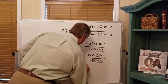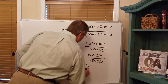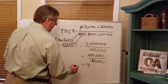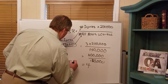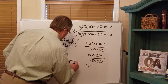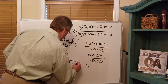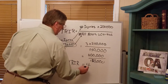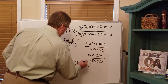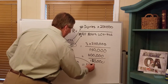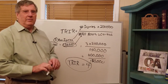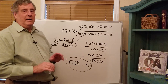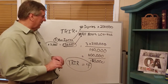So in this case our TRIR — Total Recordable Injury Rate — is equal to 4. That's all there is to this calculation; it is not a difficult calculation.